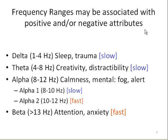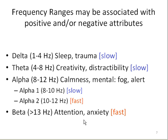Frequency ranges may be associated with positive or negative attributes. There is a morphology for theta, delta, alpha, and beta. Delta may be associated with sleep, which is a good thing, or trauma, which is a negative thing. Theta may be associated with creativity (positive) or distractibility (negative). Alpha with calmness, mental fog, or being alert. Beta could be associated with being attentive, or having anxiety.